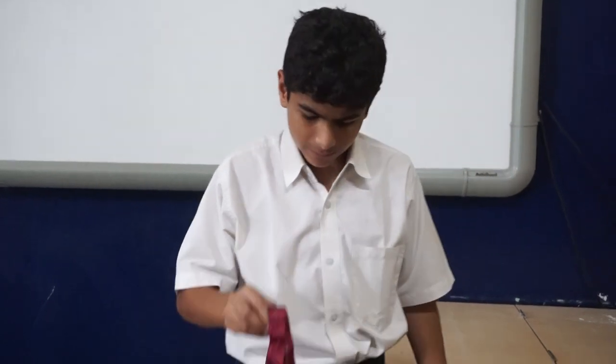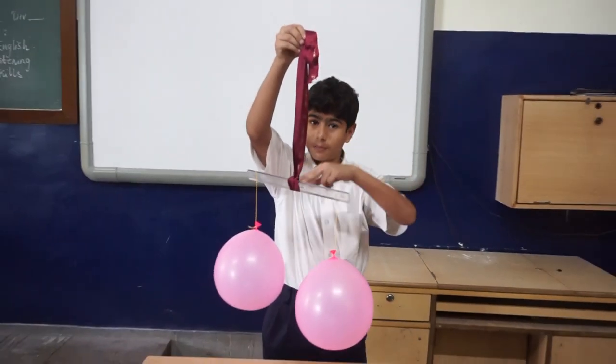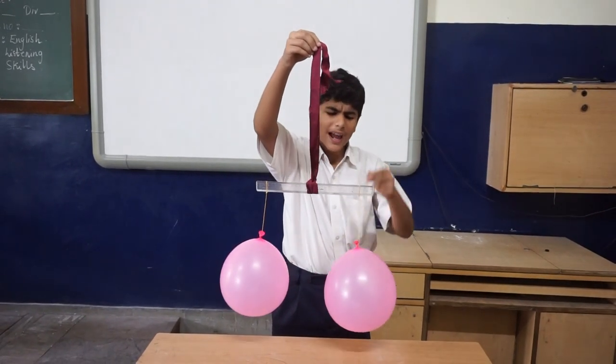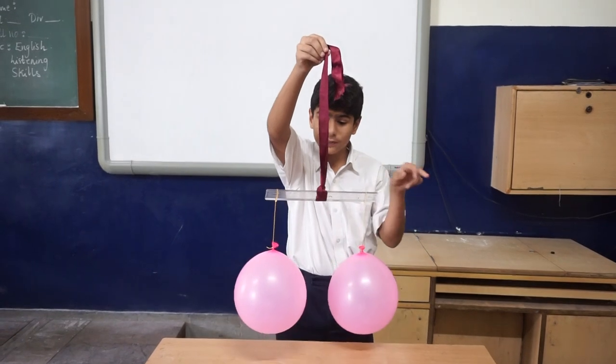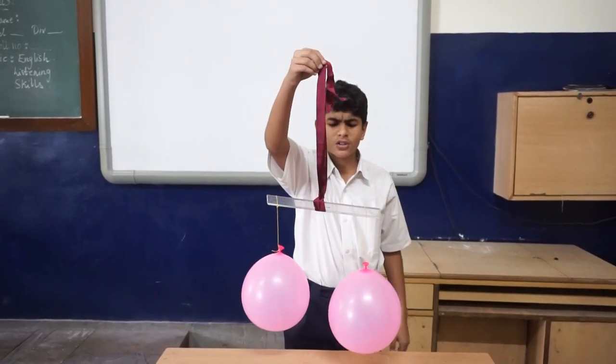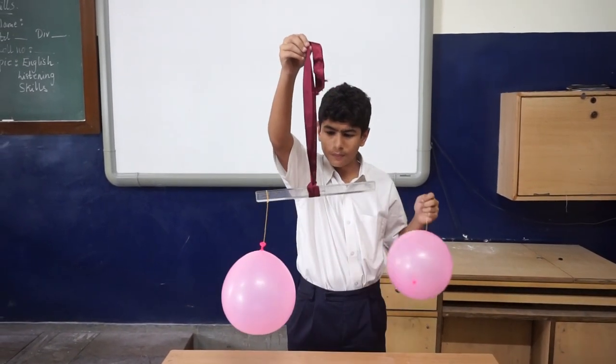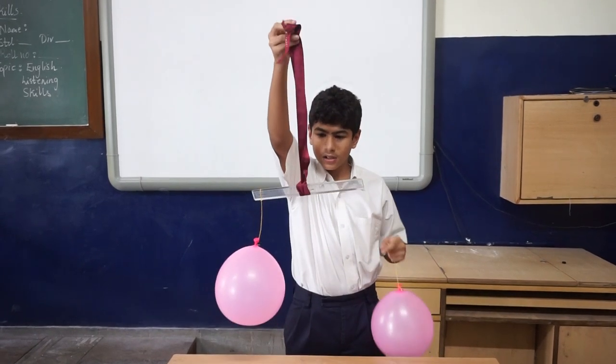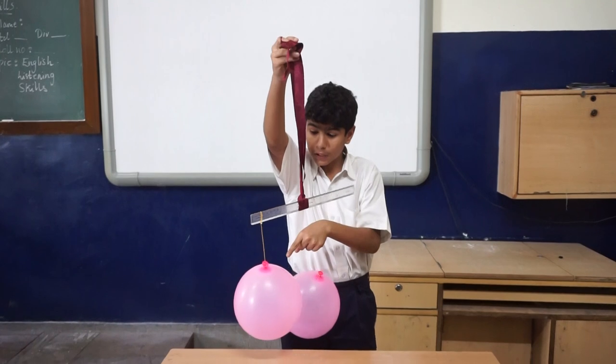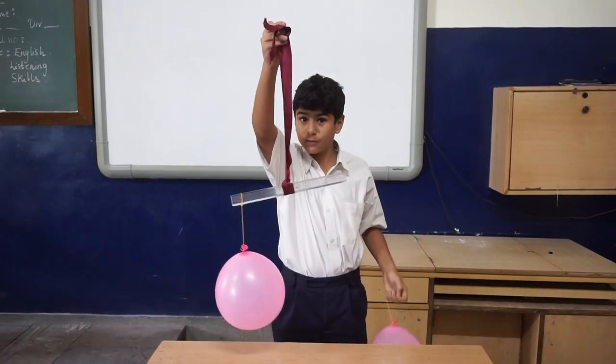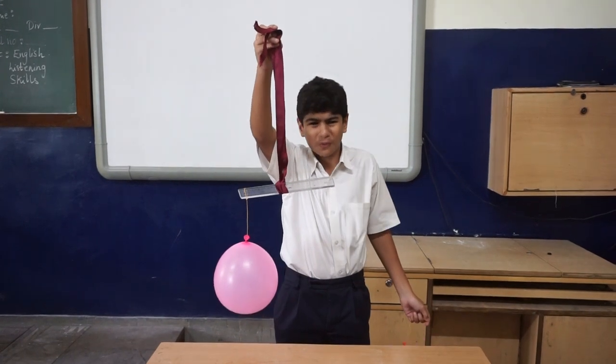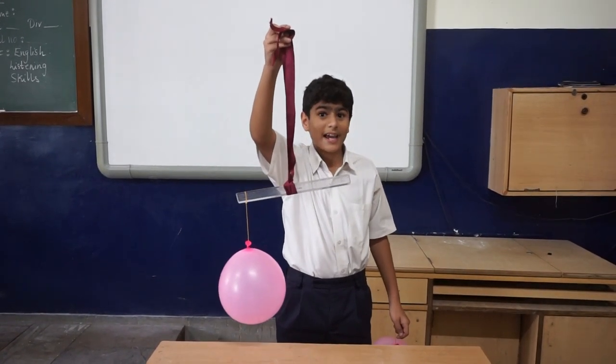And today, I am going to perform two experiments to show you that air has weight and about how electrostatic force works. So, let us start the first activity. For the first activity, I have the thread tied to the dead center of the scale. And two balloons tied to the end of the scale. And as we can see, the scale is flat. So, when I remove one balloon from the scale, which is this one right here, we see a slight tilt in the scale. And this tilt is towards the balloon which is still on the scale. And as you know, balloons are almost full of air. So, this proves that air has weight.